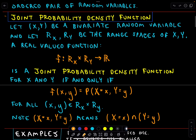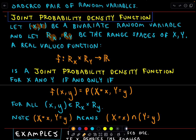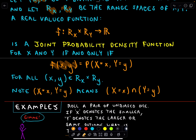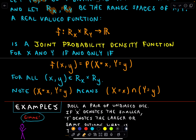A little more terminology: what is a joint probability density function? We're going to let XY be a bivariate random variable, and R sub X and R sub Y are the range spaces of X and Y — the events that can happen associated with each random variable. A real-valued function F, going from the cross product of those range spaces into the real numbers, is called a joint probability density function for X and Y if and only if F of XY equals the probability of X equaling x and Y equaling y.